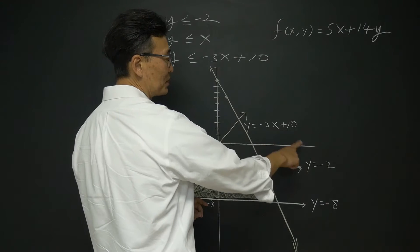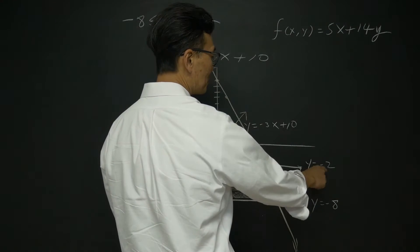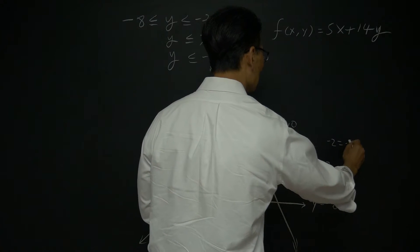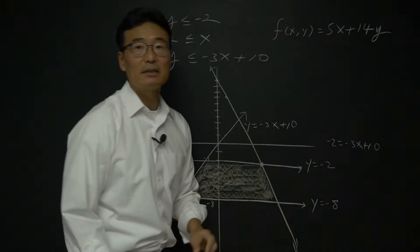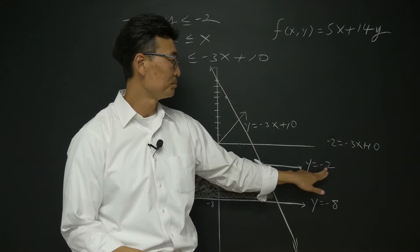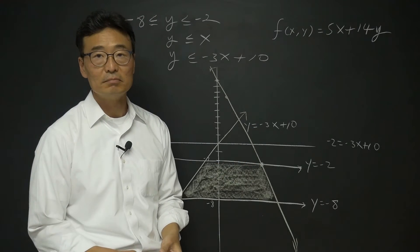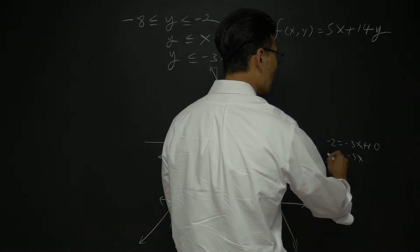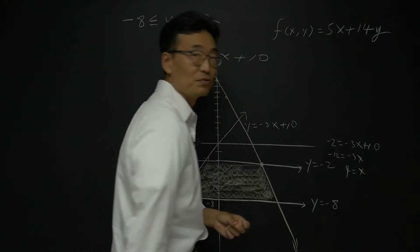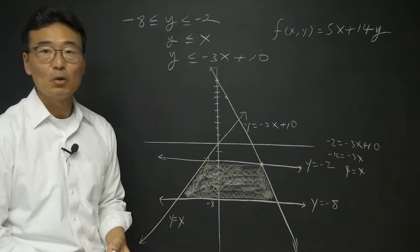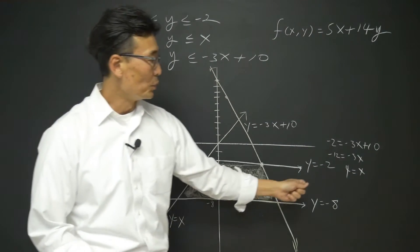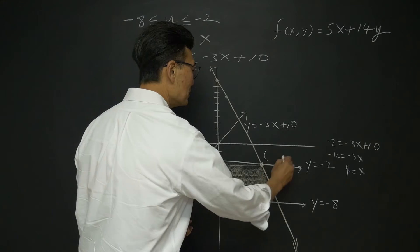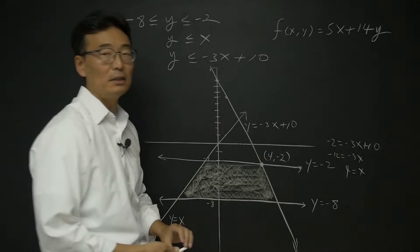Since y equals negative 3x plus 10 and y equals negative 2, I'm going to plug in negative 2 for y. So we get negative 2 equals negative 3x plus 10, which gives us negative 3x equals negative 12, or x equals 4. We already know y is negative 2, so the coordinate of this point is 4 comma negative 2.